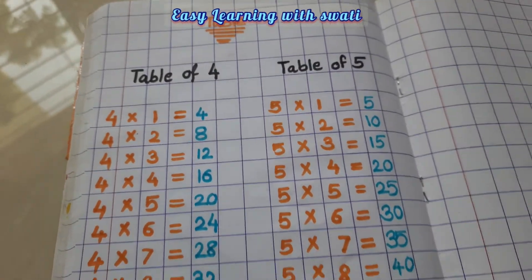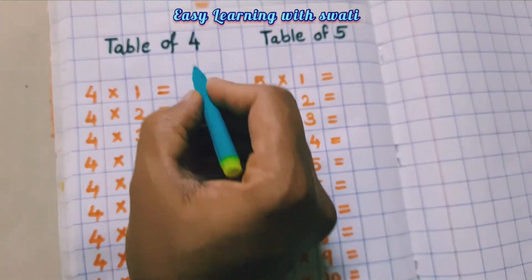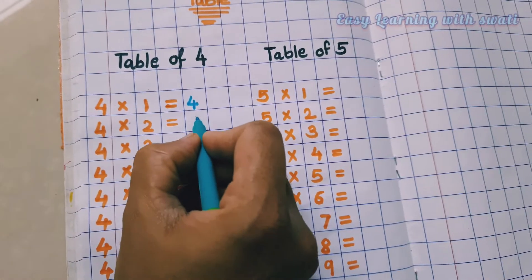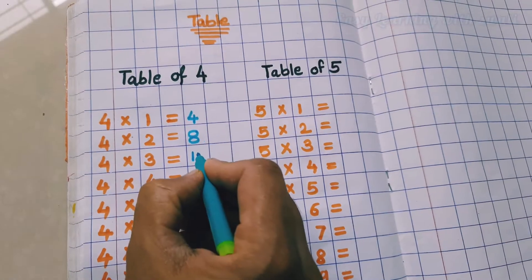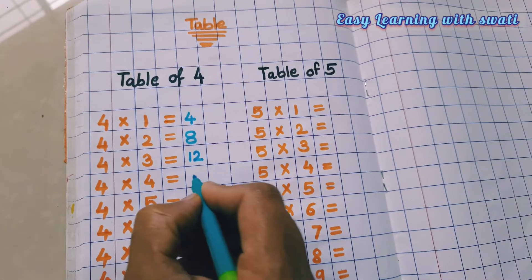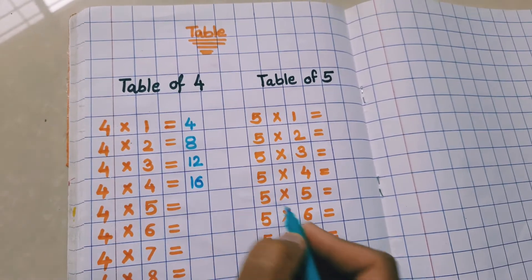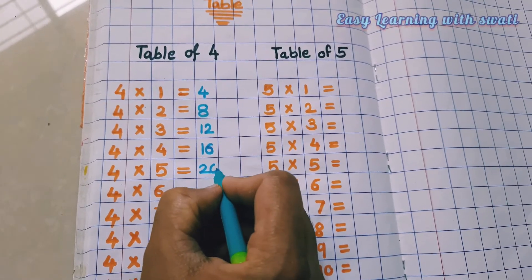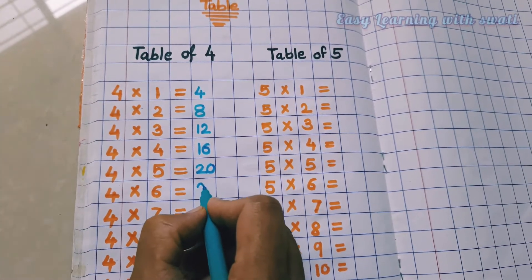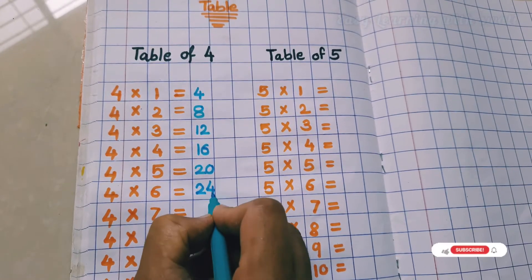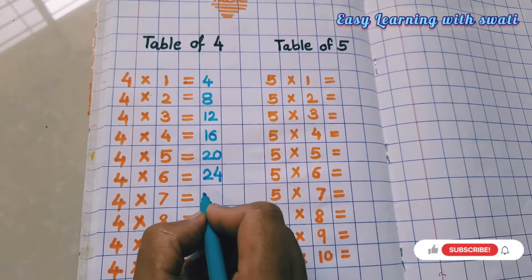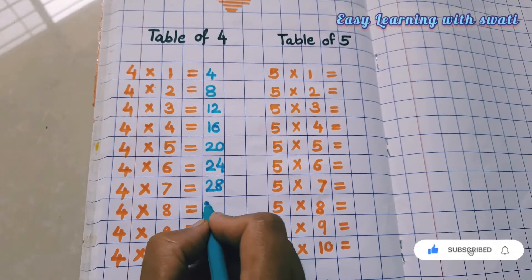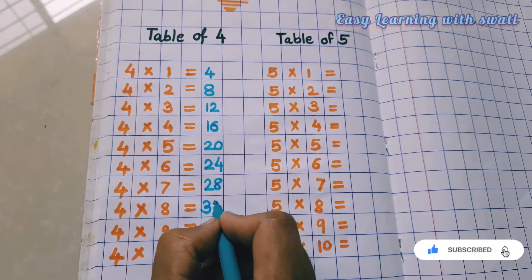Today we will see table of 4 and 5. 4 1s are 4, 4 2s are 8, 4 3s are 12, 4 4s are 16, 4 5s are 20, 4 6s are 24, 4 7s are 28, 4 8s are 32.